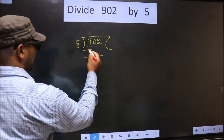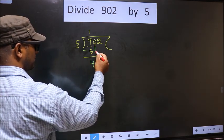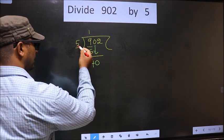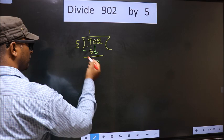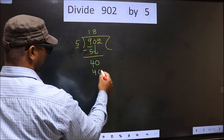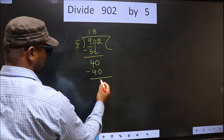Now you subtract 9 minus 5, which is 4. Now you bring down the next number, 0, so here we have 40. When do we get 40 in the 5 table? 5 times 8 is 40. Now you subtract 40 minus 40 is 0.